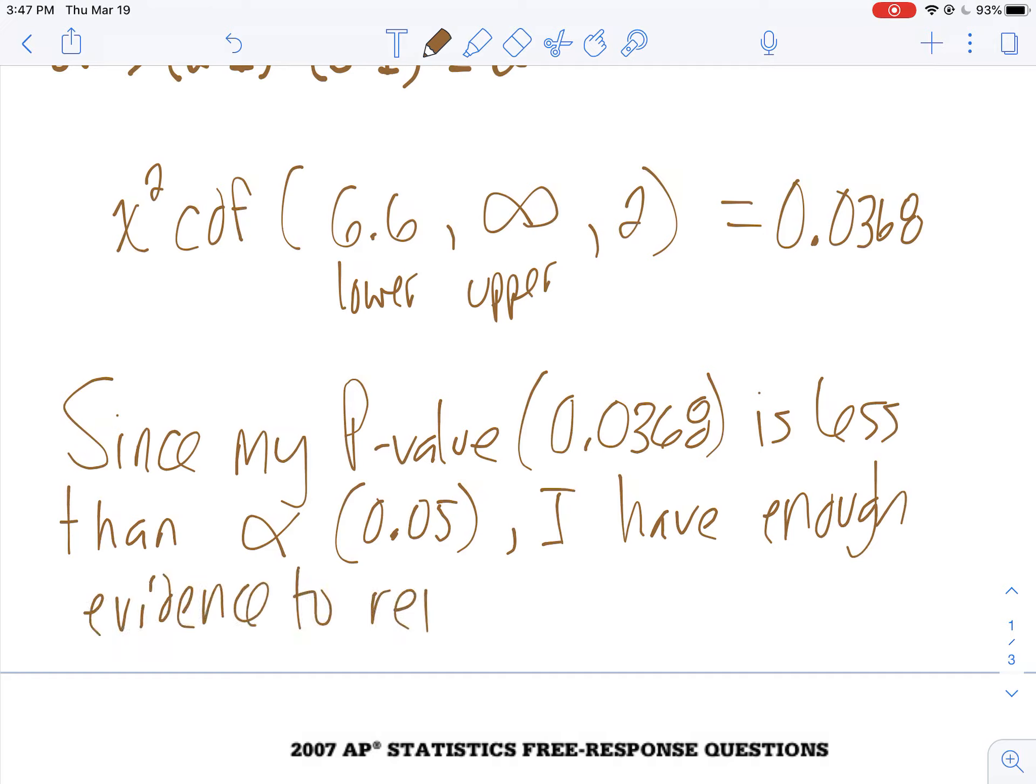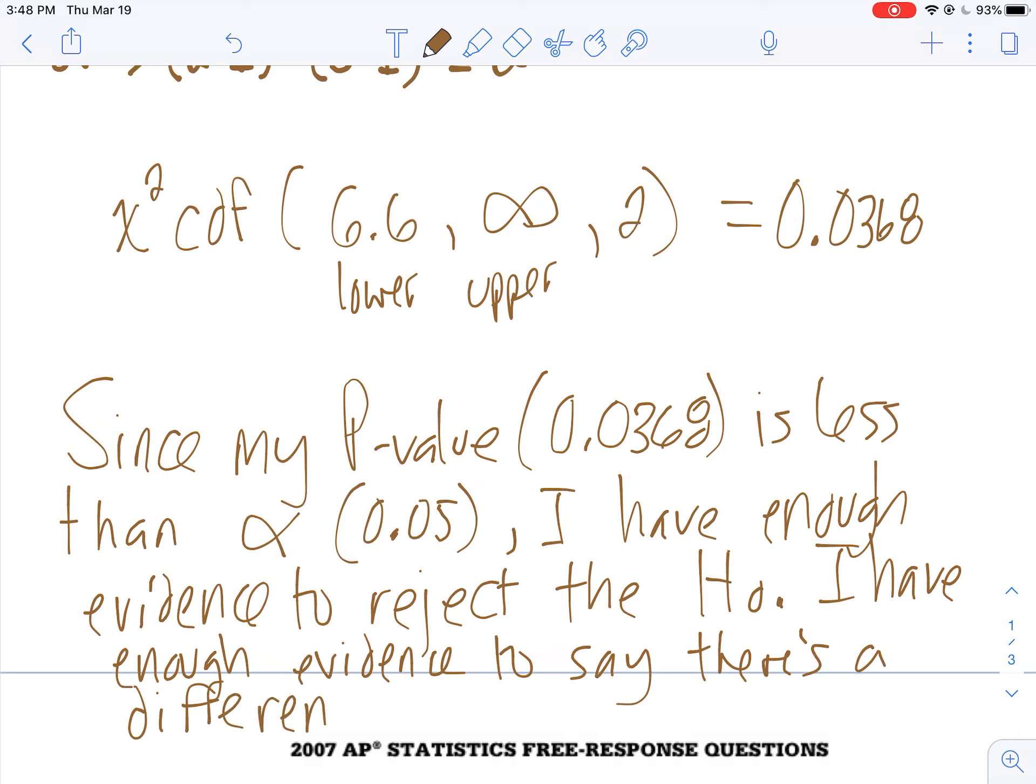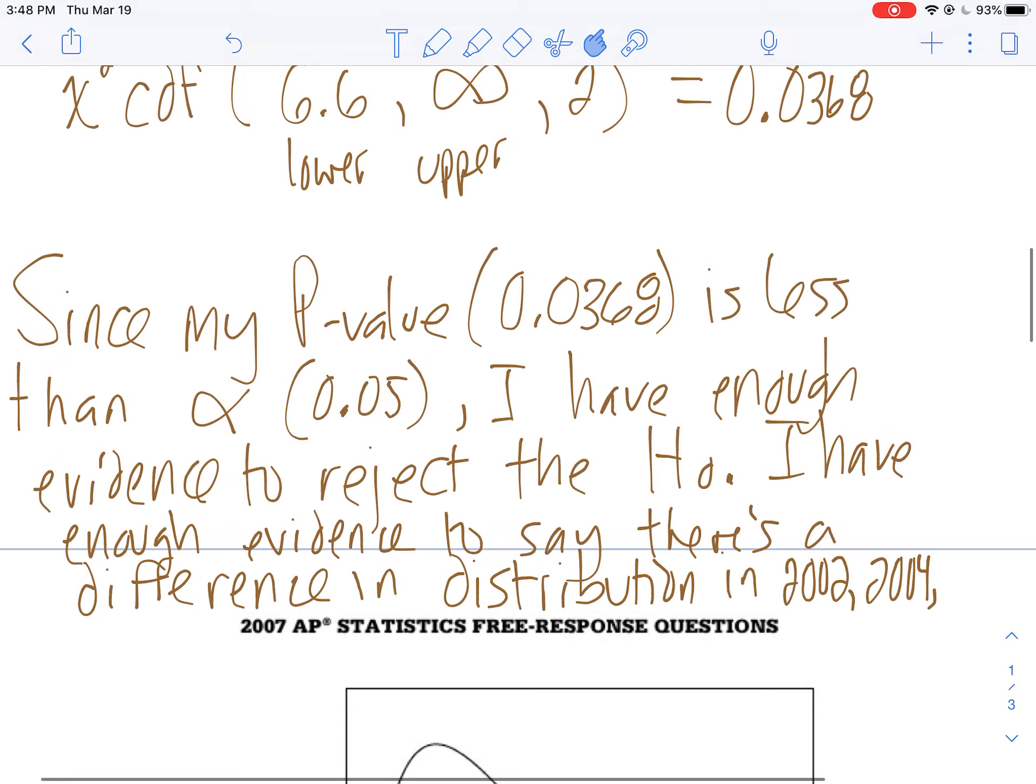So ultimately, I have enough evidence to say there's a difference in distribution. Remember, H-DID, homogeneity, D-I-D, difference in distribution. Difference in distribution in 2002, 2004, and I can squeeze this in, 2006.